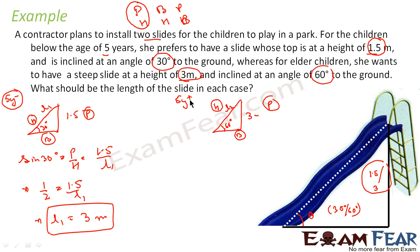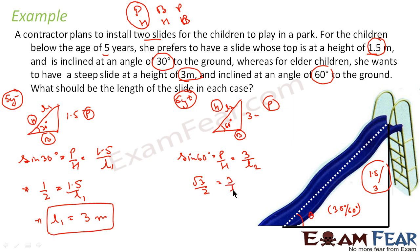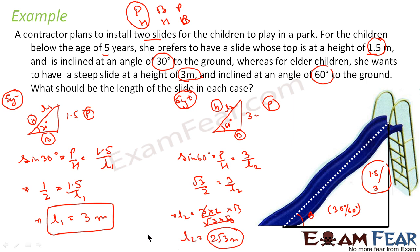In case two, for elder children above 5 years, we use the same formula: sin 60° = P/H = 3/L2. Since sin 60° = √3/2, we get L2 = 3 × 2/√3. Rationalizing by multiplying by √3/√3 gives L2 = 6/3 × √3 = 2√3 meters. So in case two, the length of the slide is 2√3 meters.